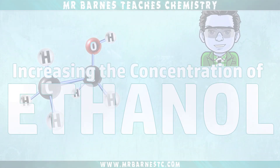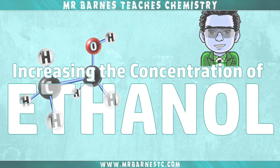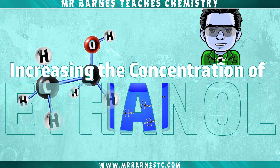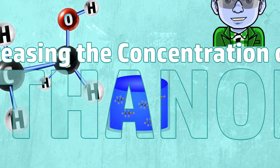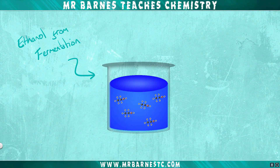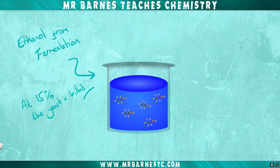Hi guys, welcome to this video looking at how we can make concentrated solutions of ethanol. When we produce ethanol from fermentation of glucose we get a solution of ethanol and water. The problem with that is that once the concentration goes above 15%, the yeast gets killed, meaning you can't produce any more ethanol from your sugars.